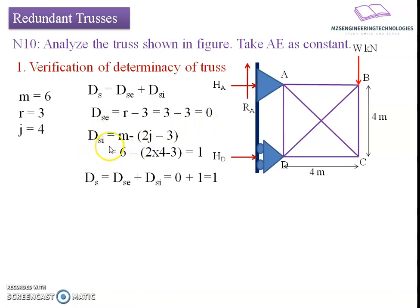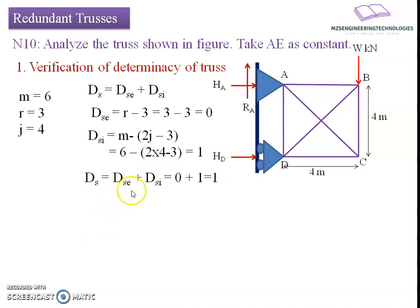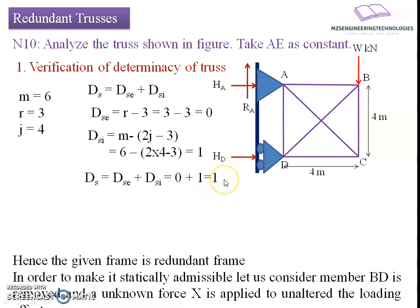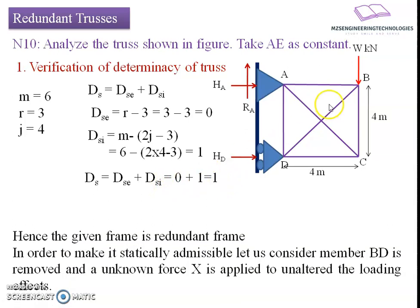For internal indeterminacy, we use the relation M minus (2J minus 3): 6 minus (2×4 minus 3) results in a value of 1, meaning one member force is in excess. The total degree of static indeterminacy DS equals DSe plus DSi, which comes to 0 plus 1 equals 1.